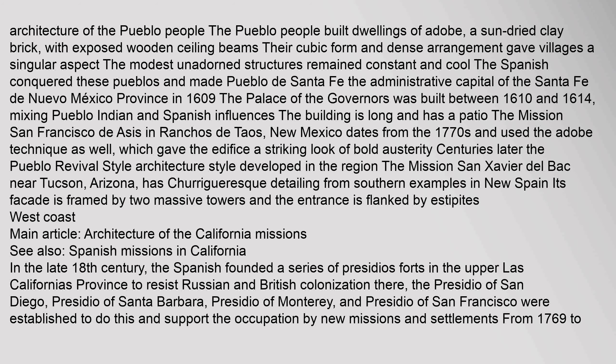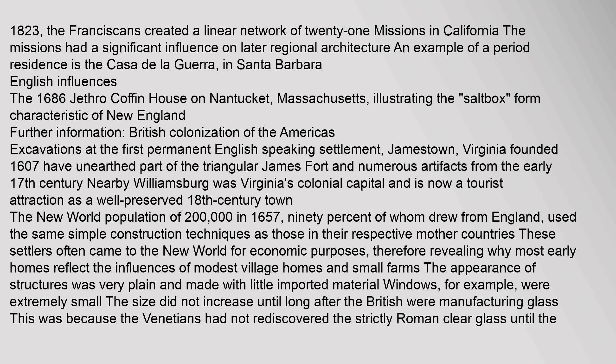The Pueblo Revival-style architecture developed in the region. The Mission San Javier del Bac near Tucson, Arizona, has Churrigueresque detailing from southern examples in New Spain; its façade is framed by two massive towers. In the late 18th century, the Spanish founded a series of Presidios in the upper Las Californias province to resist Russian and British colonization. The Presidios of San Diego, Santa Barbara, Monterey, and San Francisco were established to support new missions and settlements. From 1769 to 1823, the Franciscans created a linear network of 21 missions in California, which had a significant influence on later regional architecture.